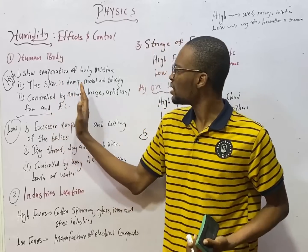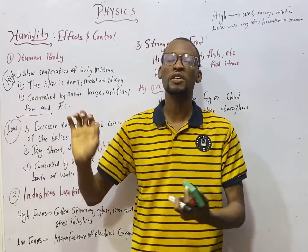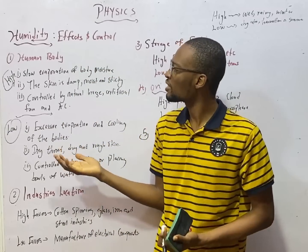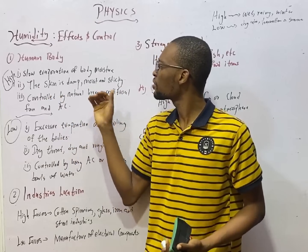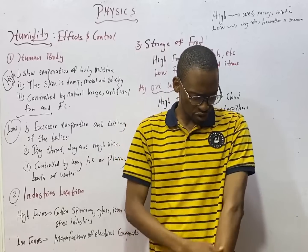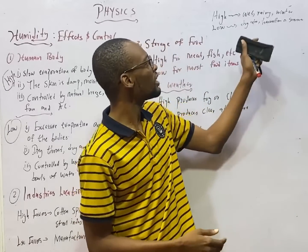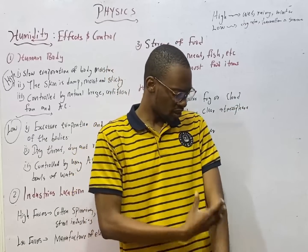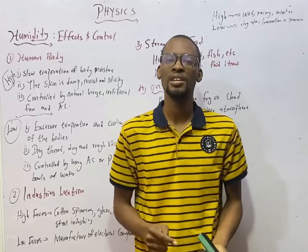On the human body, when there is high humidity, there is slow evaporation of body moisture. Because your body is wet, this moisture will remain and will hardly evaporate. Even during wet or rainy periods, there is slow evaporation of wetness from your body.